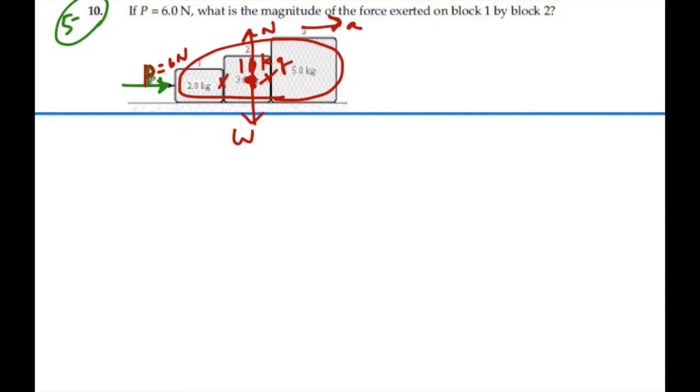So if I were to write Newton's second law based on the X direction, I would say the summation of all the forces in the X direction is equal to mass times acceleration. This would be the total mass times acceleration, MA.